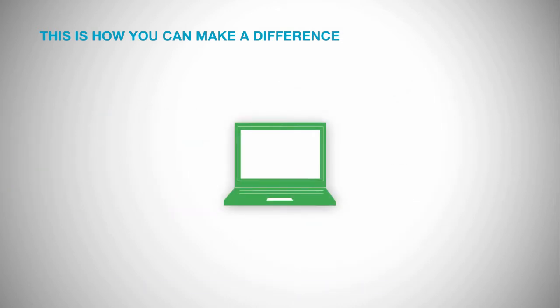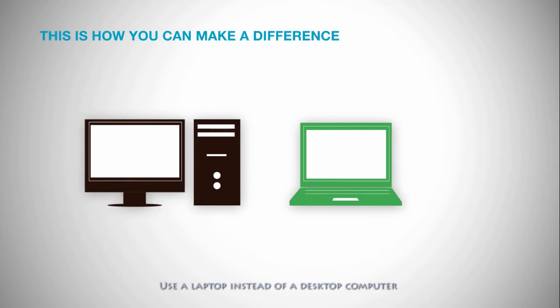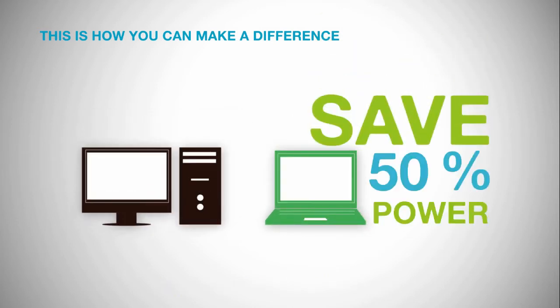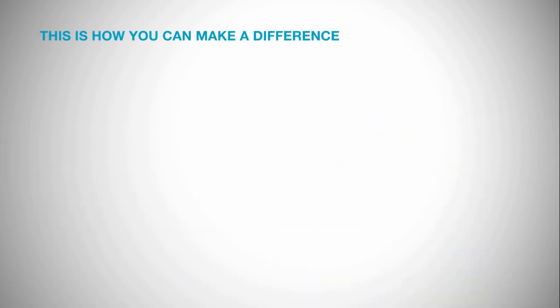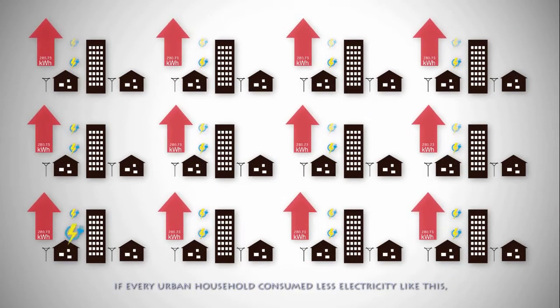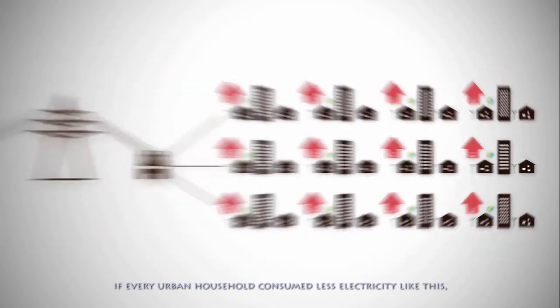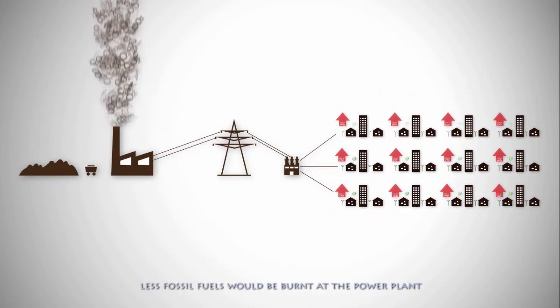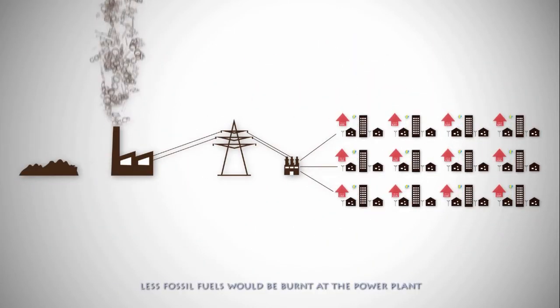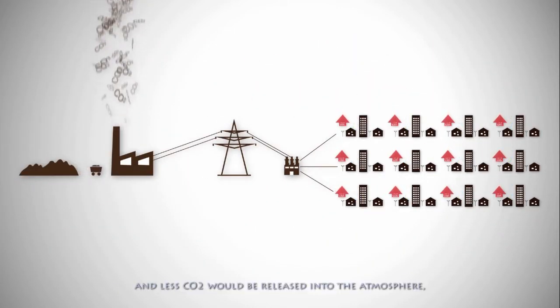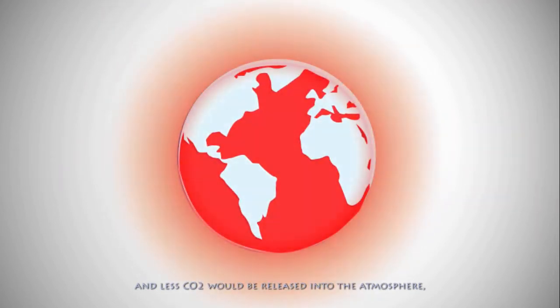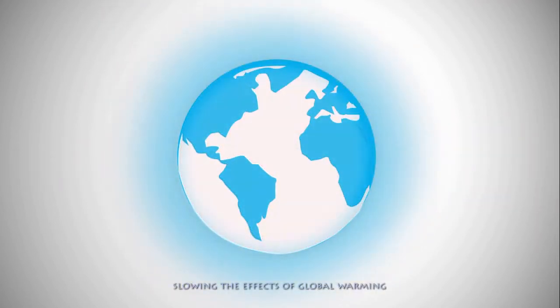Use a laptop instead of a desktop computer — this will save up to 50% of the power used. If every household consumed less electricity like this, less fossil fuels will be burned at the power plant, and less CO2 will be released into the atmosphere, slowing the effects of global warming.